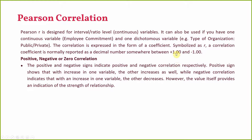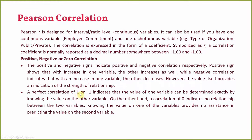A perfect correlation of 1 or −1 indicates the value of one variable can be determined exactly by knowing the value of the other. A correlation of zero indicates no relationship — knowing one variable's value provides no assistance in predicting the other. If there is absolute correlation, both variables are measuring the same thing, indicating multicollinearity, and you may need to delete one variable from your study.